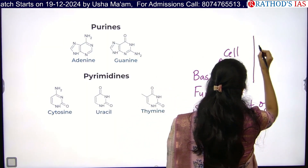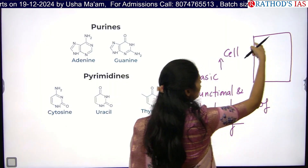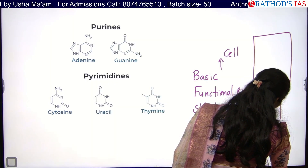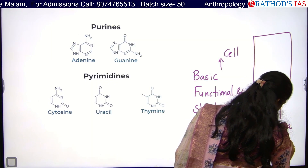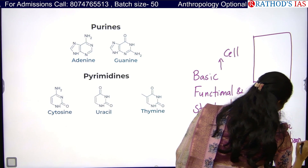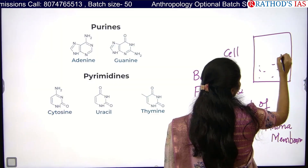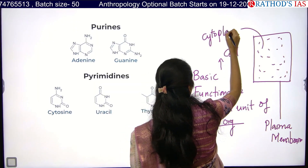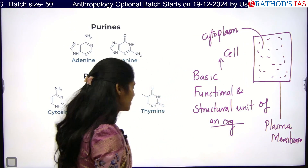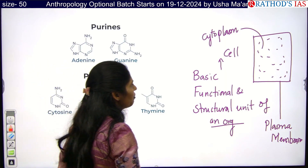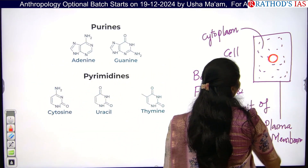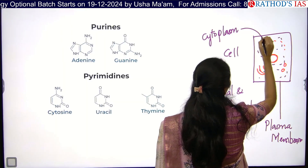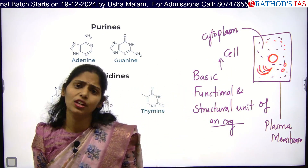Let us consider this as a cell. The cell is covered by a membrane called the plasma membrane. Inside this cell we also have a liquid called cytoplasm. And not only that, we can see there are different organelles — like nucleus, Golgi complex, ribosomes, lysosomes, and endoplasmic reticulum. We have different organelles.